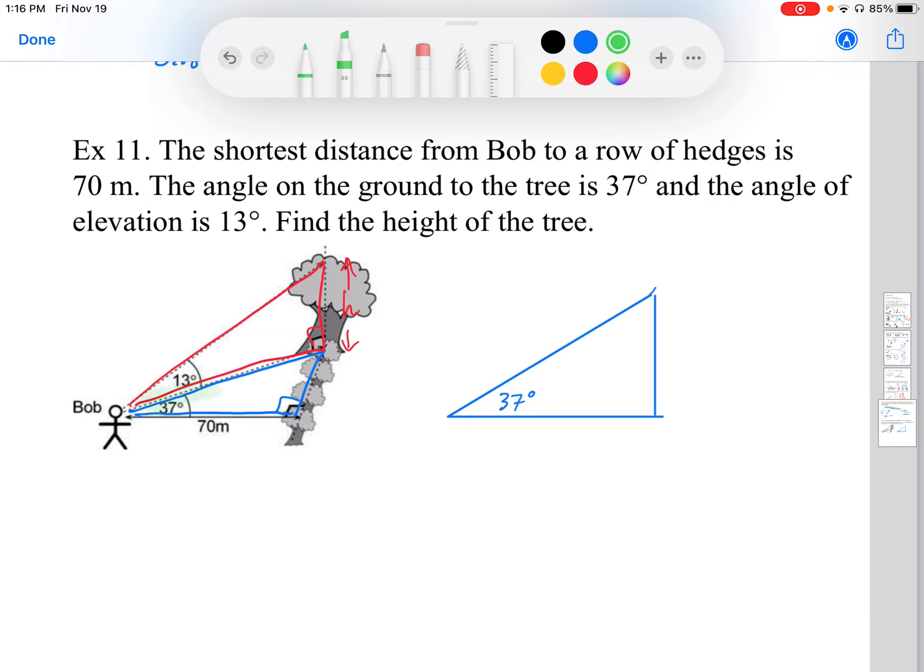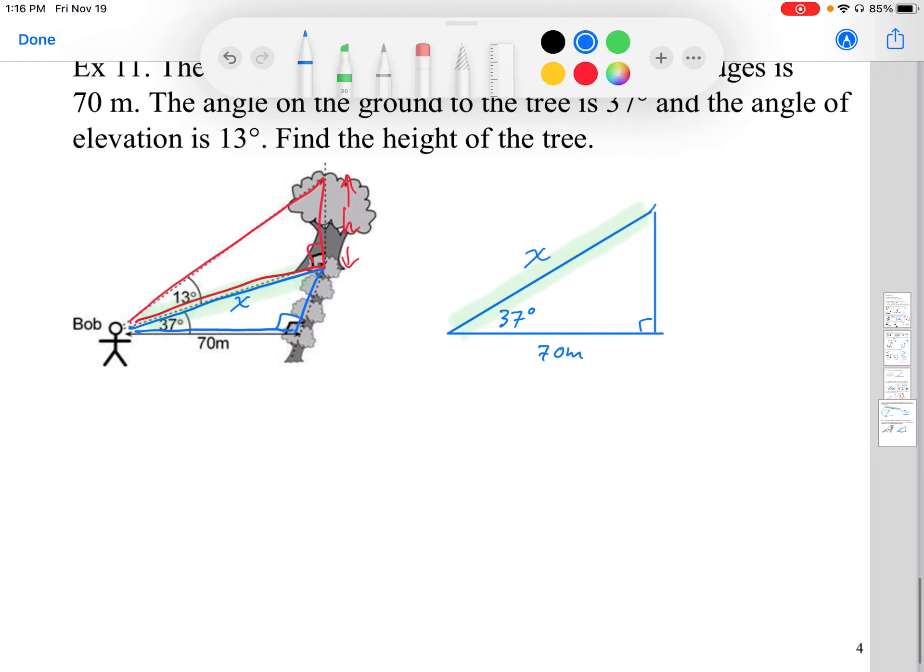And the common side length, this common side length here is going to be the hypotenuse here. What I've been given in this triangle though is this length of 70 meters. And I want to find this length. I'm going to just call that x. I have adjacent and hypotenuse of 37 degrees, so that means I need a cosine ratio.